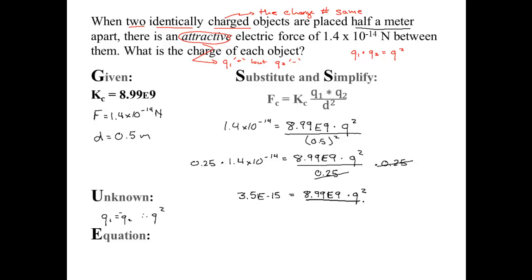I want to get Q squared by itself, so I'm going to divide by 8.99 E9. Again, these two cancel. Whenever you do the right, you have to do the left. And you get Q squared equals 3.8932146 times 10 to the negative 25.